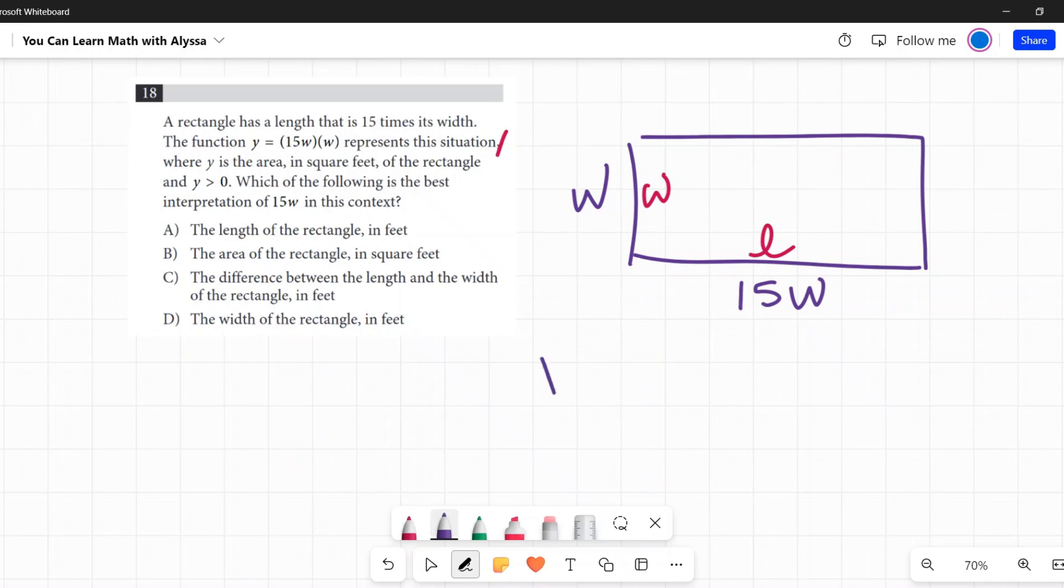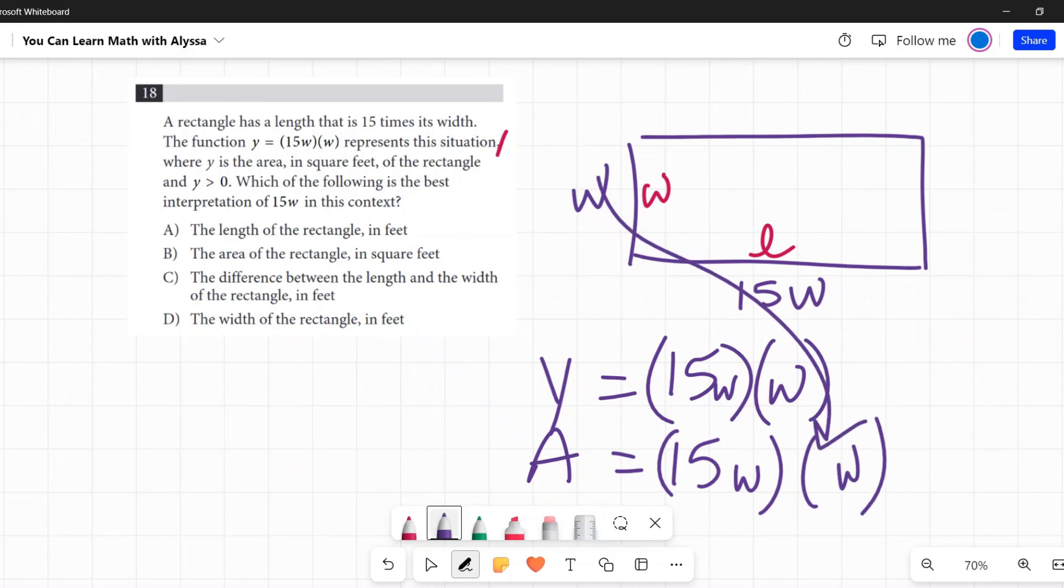So y equals 15w times w. Length times width and y is going to be the area in square feet. Makes sense, right? Length times width is how we find the area of a rectangle. And there's my width and there's my length.